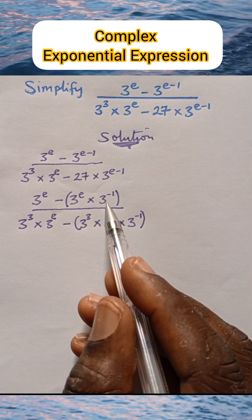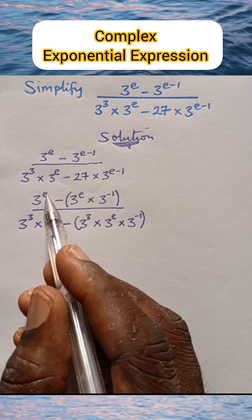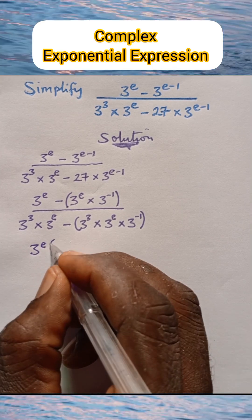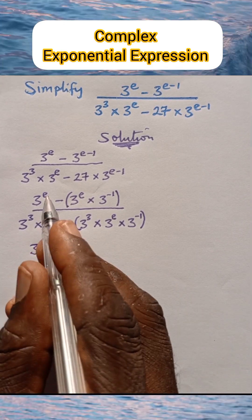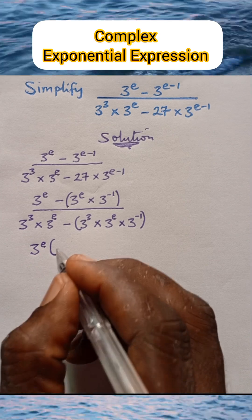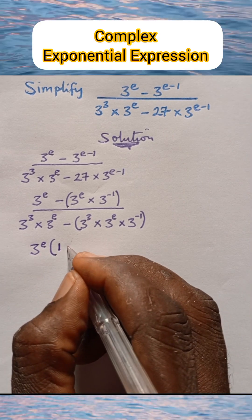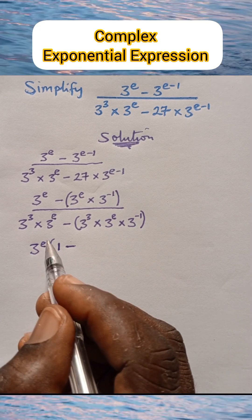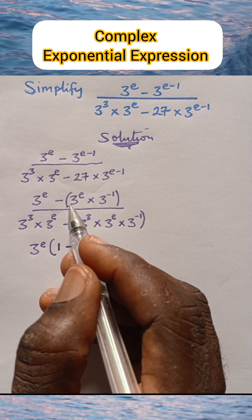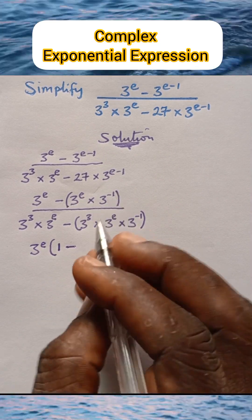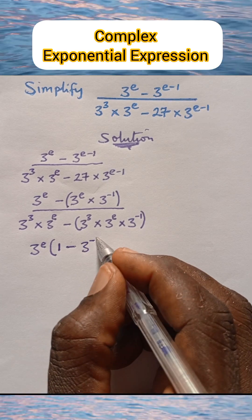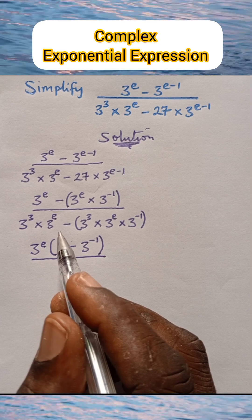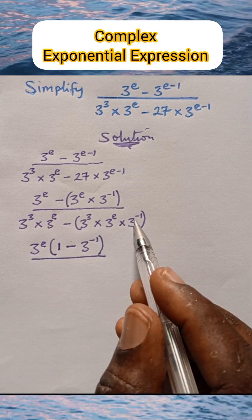We are going to factor out 3 raised to power e. So we put 3 raised to power e outside, then open a bracket. This divided by this gives us 1, and then this expression divided by this simply cancels, leaving us with 3 raised to power negative 1. So we write 3 raised to the power of negative 1 in the bracket.